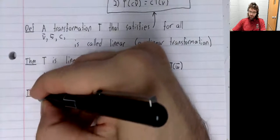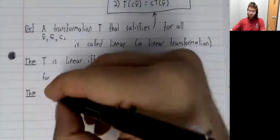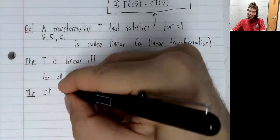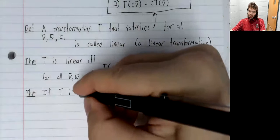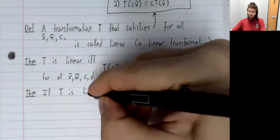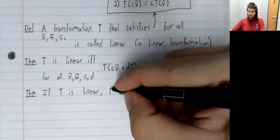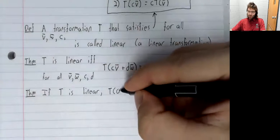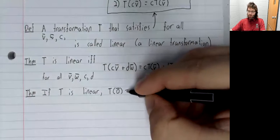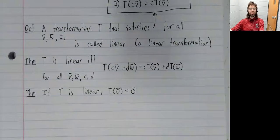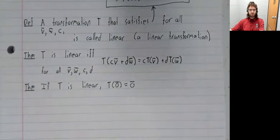Here's a second theorem. If T is linear, then T of the zero vector equals the zero vector.